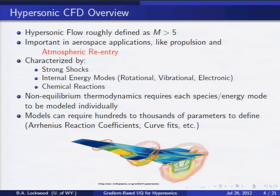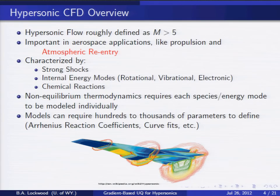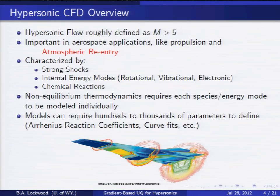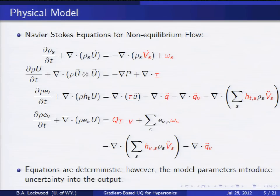The specific problem I'm looking at is hypersonic fluid flow, roughly defined as Mach number greater than five, seen in aerospace applications. My specific focus is atmospheric reentry — the kind of flow the space shuttle saw coming in from orbit. It's characterized by strong shocks leading to extreme temperatures and pressures, internal energy modes of molecules becoming active, and dissociation of molecules that must be modeled. Because of all this non-equilibrium thermodynamics, the models used have hundreds or thousands of experimentally determined parameters, and we need to propagate that uncertainty to our design output. The equations we're solving are the Navier-Stokes equations, which are deterministic.